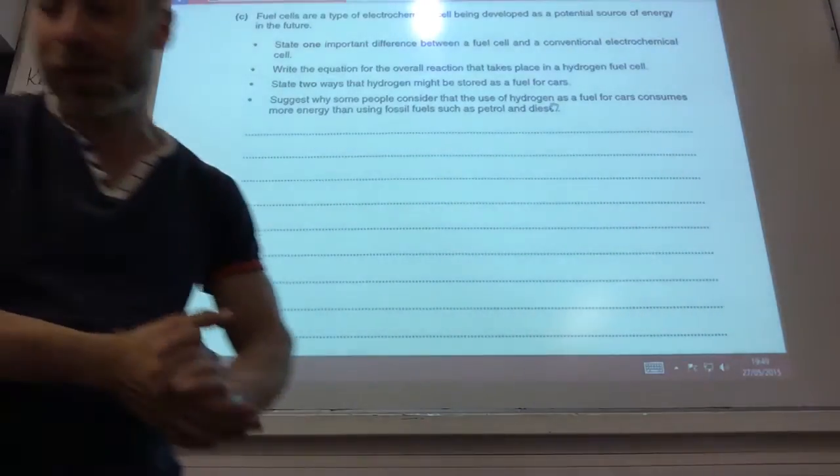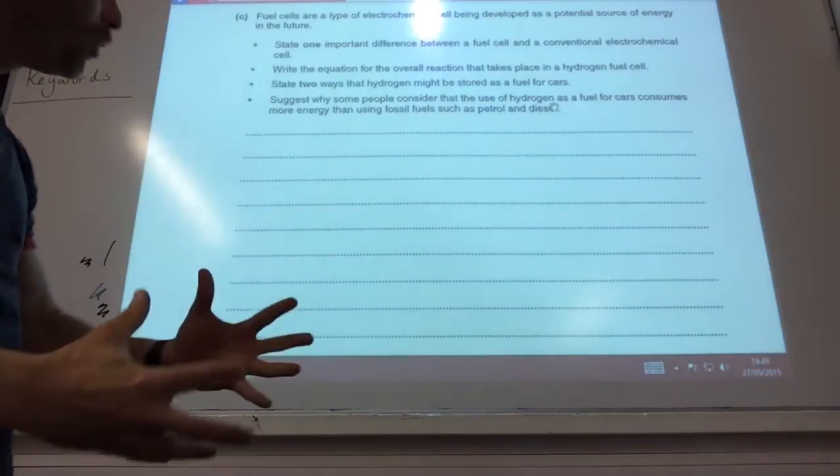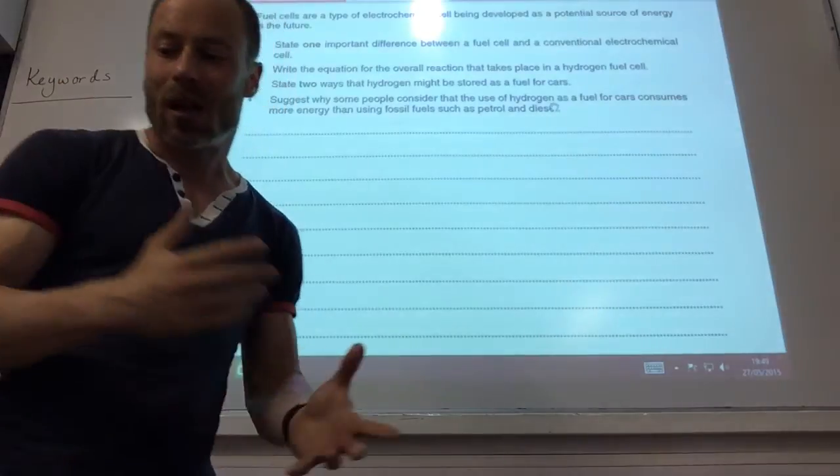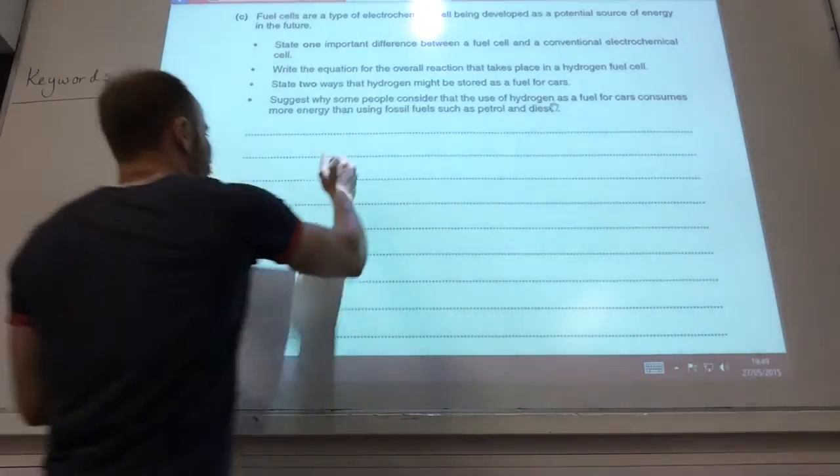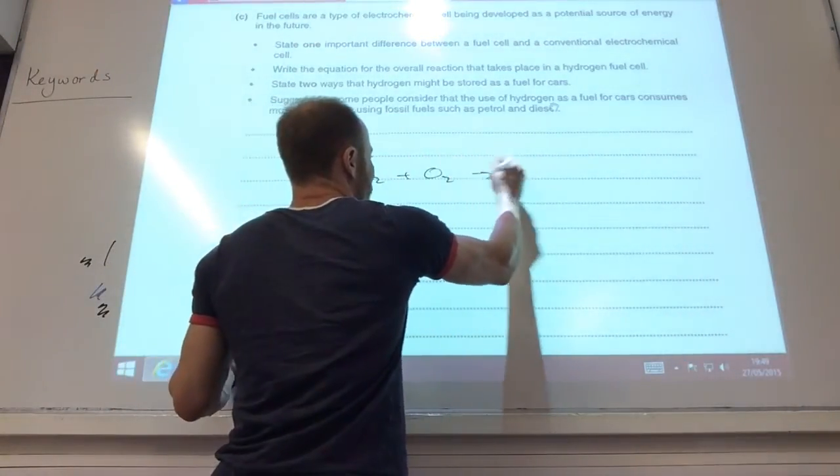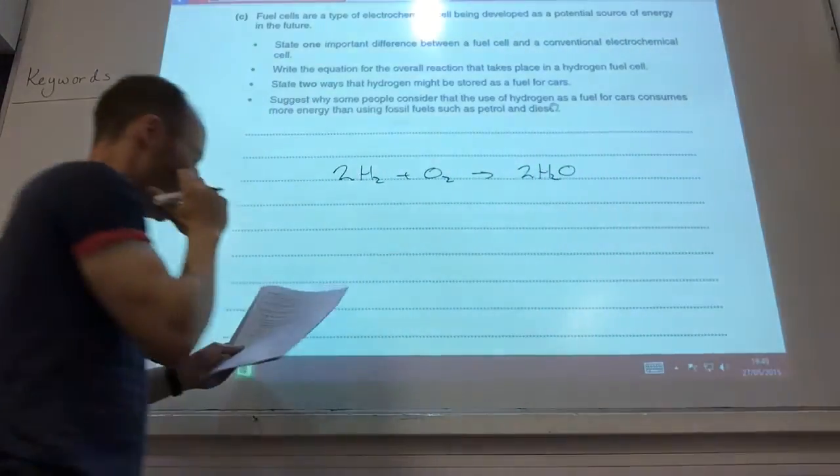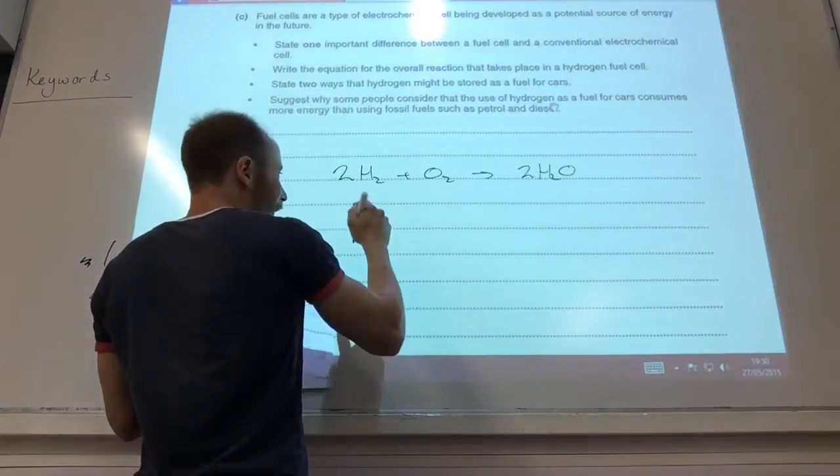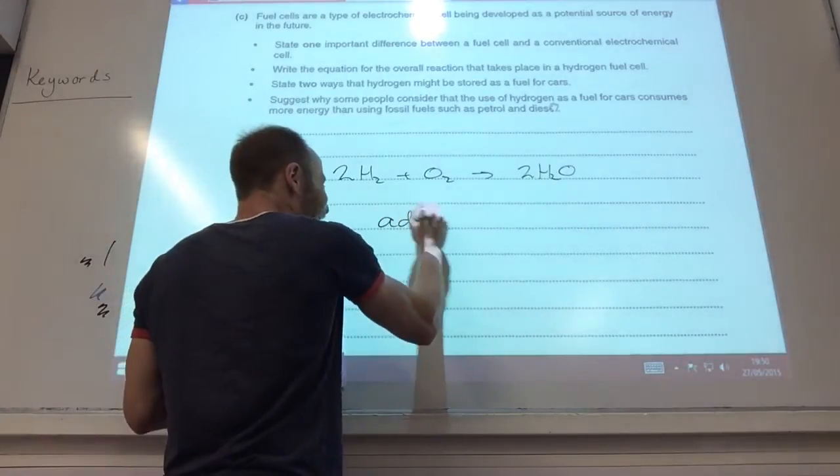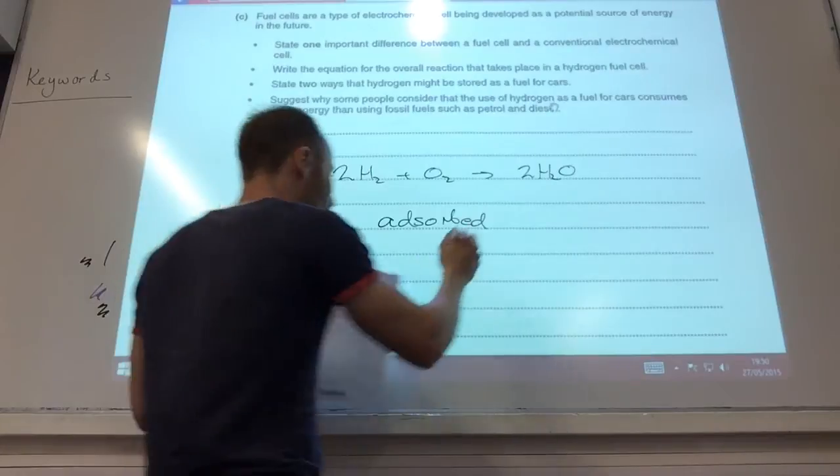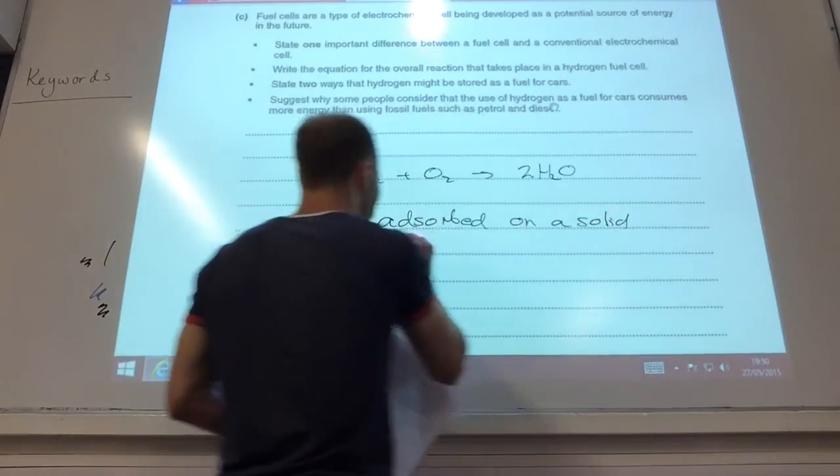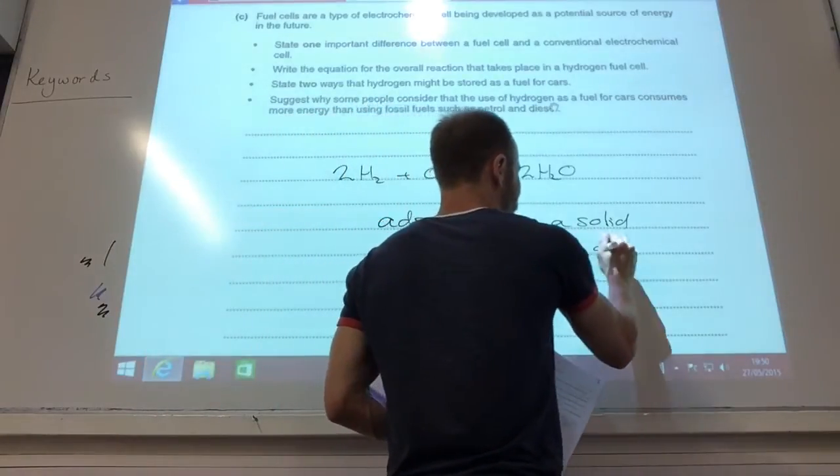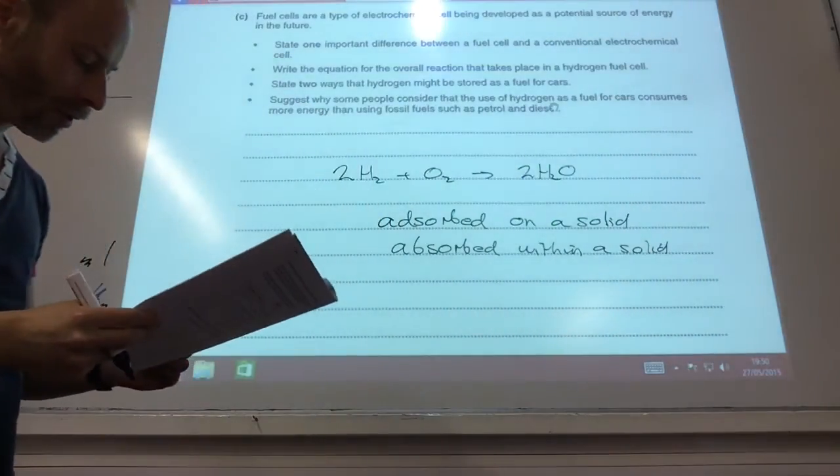So one important difference between a fuel cell and a conventional electrochemical cell. A fuel cell converts energy from a reaction of a fuel with oxygen into electrical energy. What is the equation? 2H2 plus O2 gives you 2H2O. That's what's actually happening. How can you store the hydrogen? You can store it under pressure. It can be adsorbed on a solid, or it can be absorbed within a solid. So just make sure you get those right.